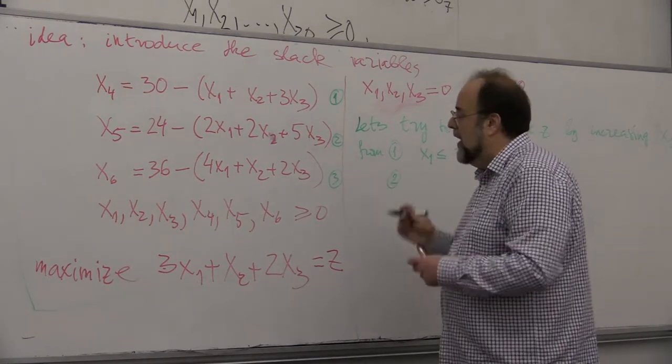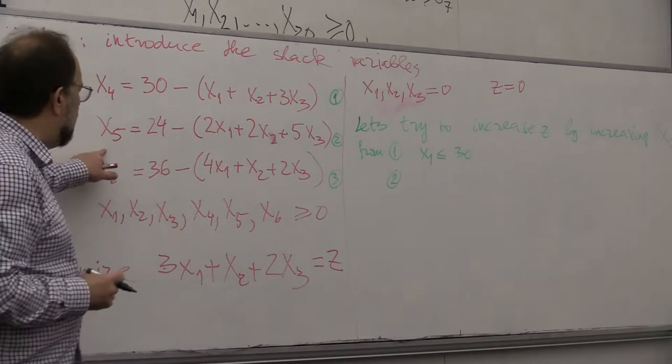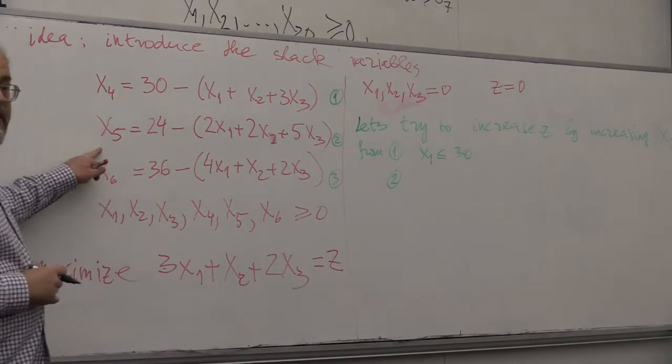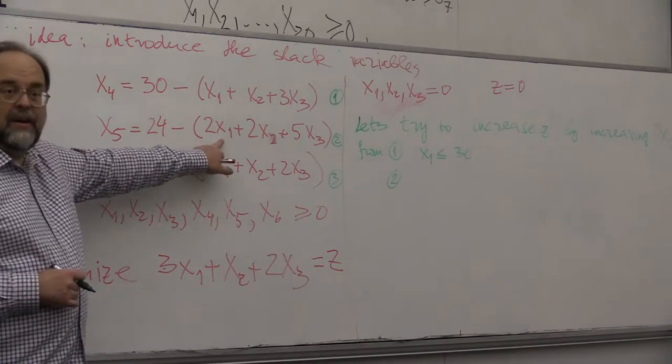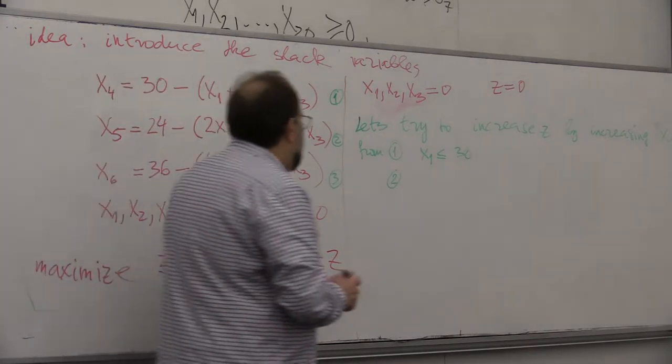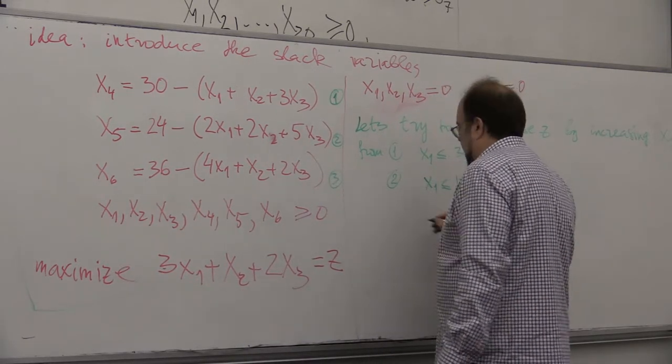Now from 2, how big can x1 be in order not to violate the positiveness of x1? How big can x1 be? Well, so from 2, x1 is smaller or equal than 12.